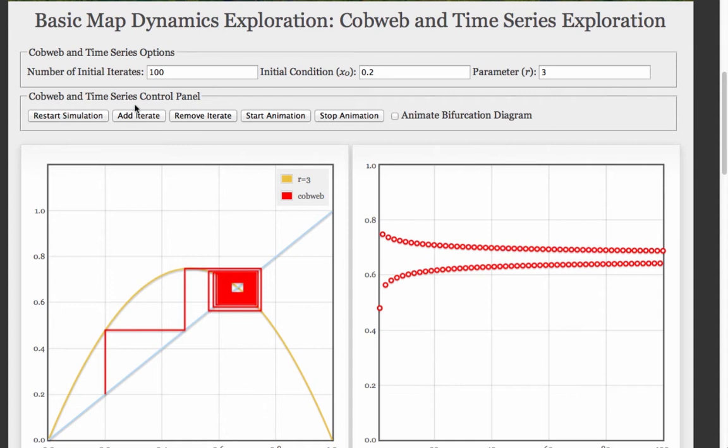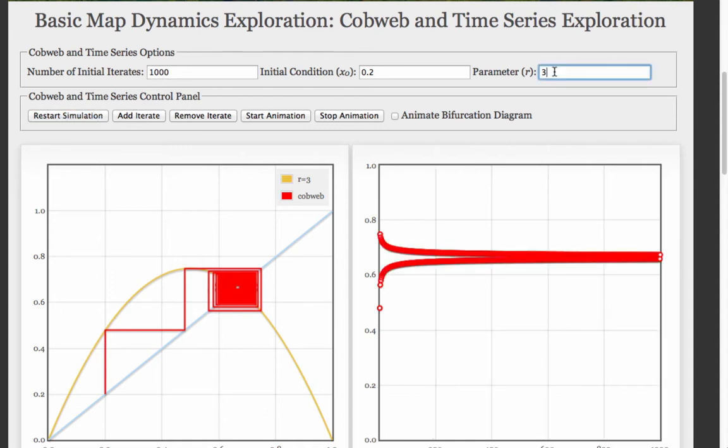Hmm, still looks like it might be converging. Let's raise R a little bit more and see what happens. Still looks like it might be converging to a fixed point, but again, this transient is really long. Let's go a little bit higher and see what happens.